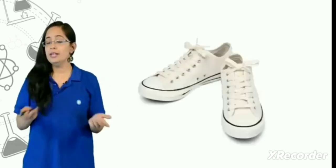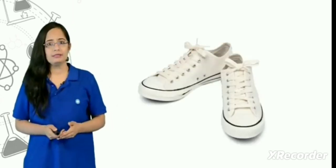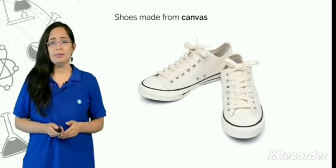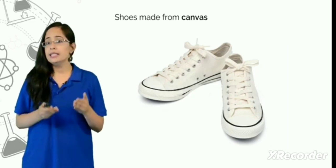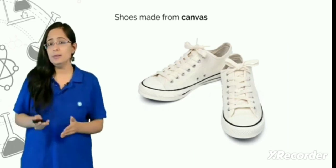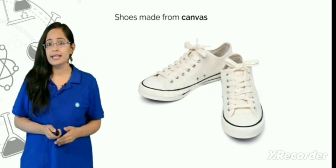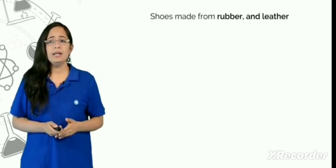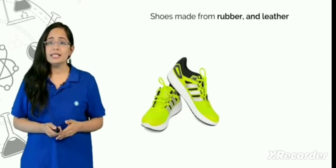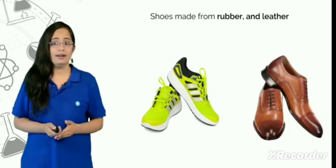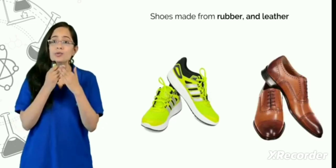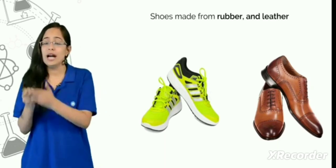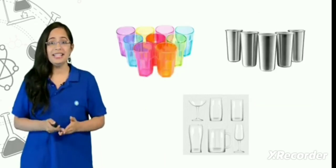Let's find out. For example, this is an object — we call it shoes. This shoe is made up of a material which we call canvas. But shoes can be made up of other materials as well, like rubber or leather. So we can see that a single object can be made up of different kinds of materials.